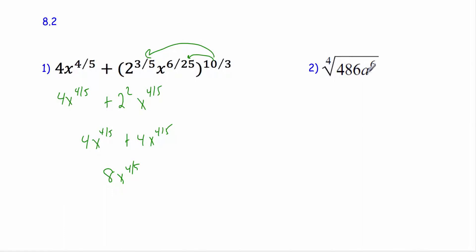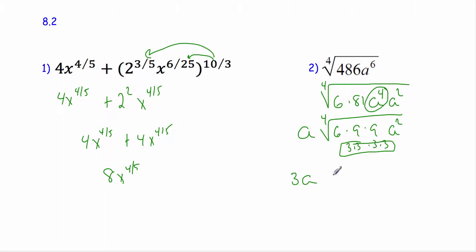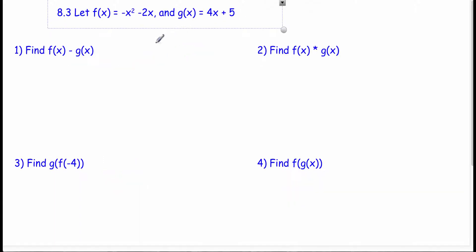Over here I want to take the fourth root of 486a to the sixth, so I need quadruplets. Six times 81 is 486. I'll rewrite a to the sixth as four a's and two a's. 81 is nine times nine, and nine is three times three. Now I have an a to the fourth that can come out, the a squared stays, and three times three gives me quadruplets. So I take out 3a, leaving 6a squared inside. That's 8.2.